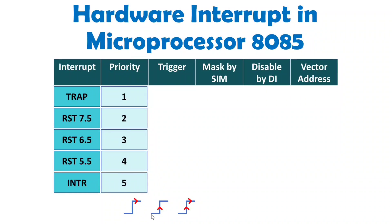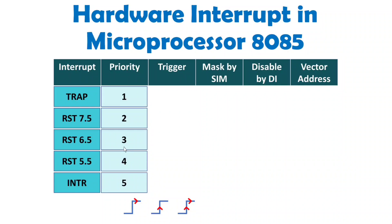When it comes to edge trigger, whenever there is a transition from low to high, at that point there is a triggering — this is edge trigger. And you can see here: when there is a transition from low to high there is triggering, and whenever it remains high there is also triggering. This means this signal indicates your interrupt is both level as well as edge triggered.